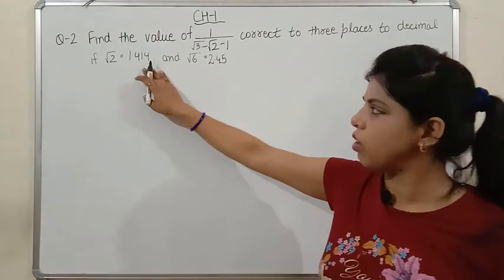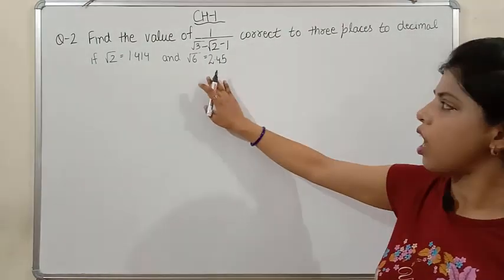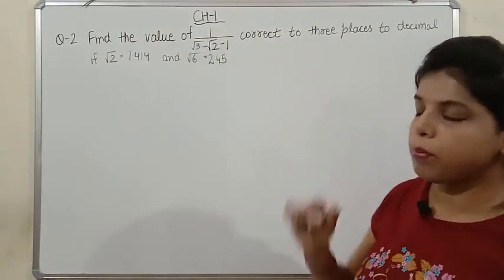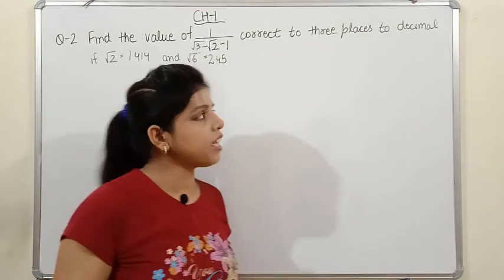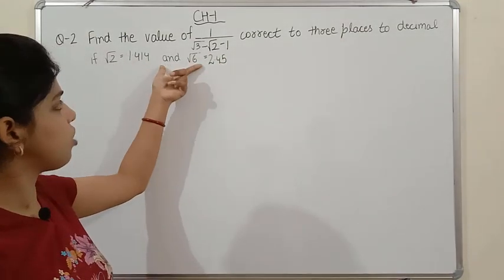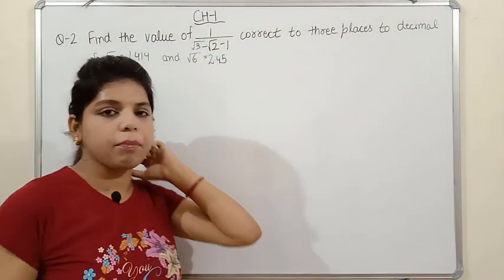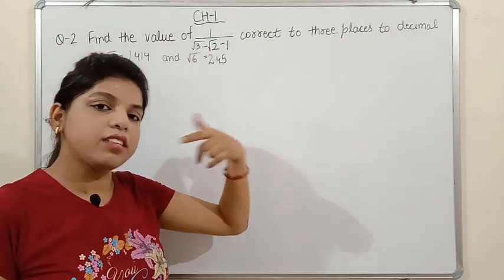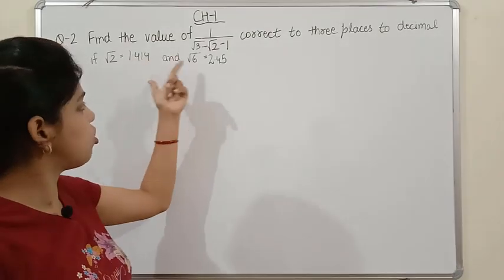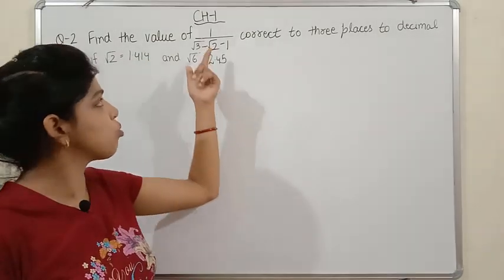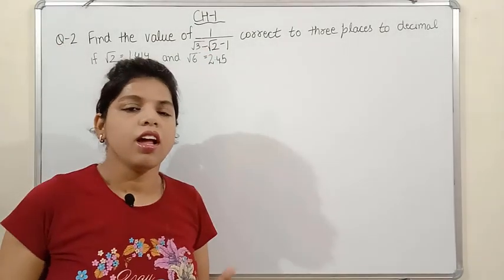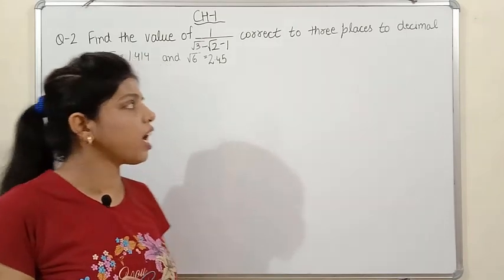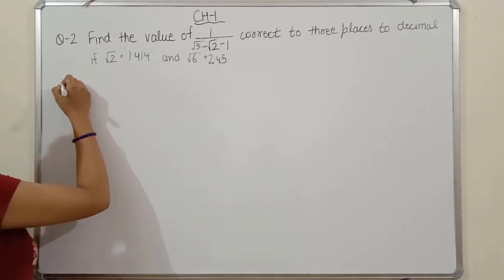Here, if you are given the values of two terms, it doesn't mean you directly substitute them first. First you simplify this term, and then you put the values of √2 and √6. We don't see √6 now, but when we solve, √6 will appear. Let us see how.